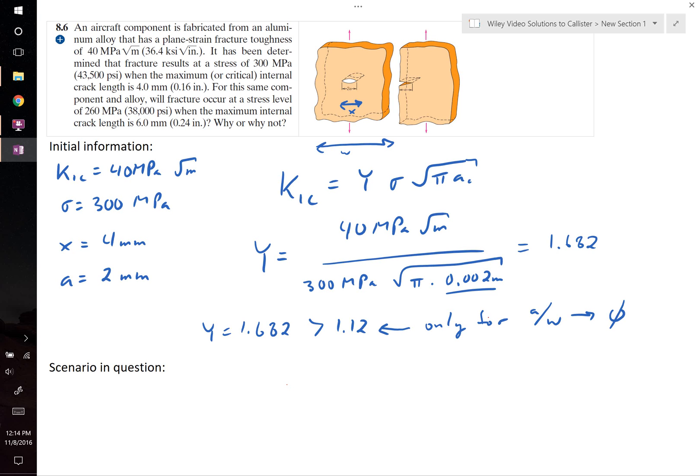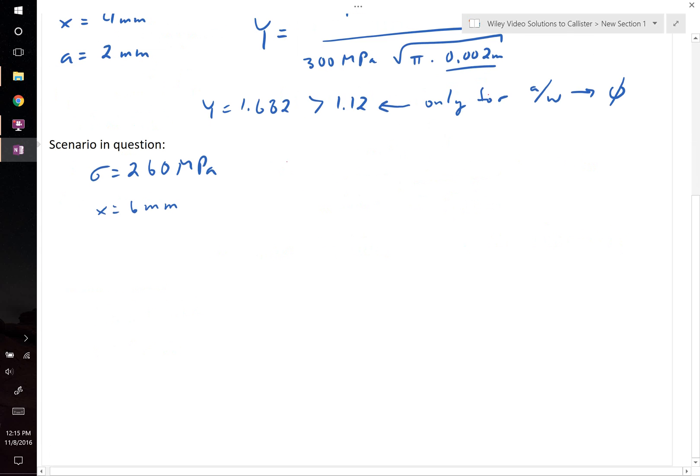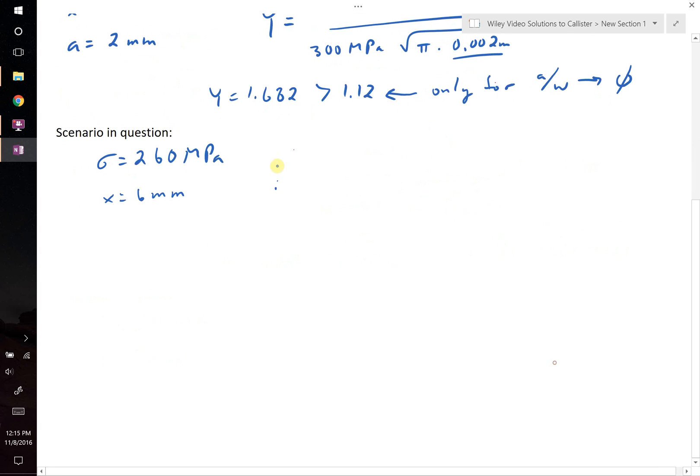For the same component and alloy, will fracture occur at a stress of 260 MPa if it has an internal flaw of 6 mm? Since it's the same material, we can write our fracture toughness as follows.